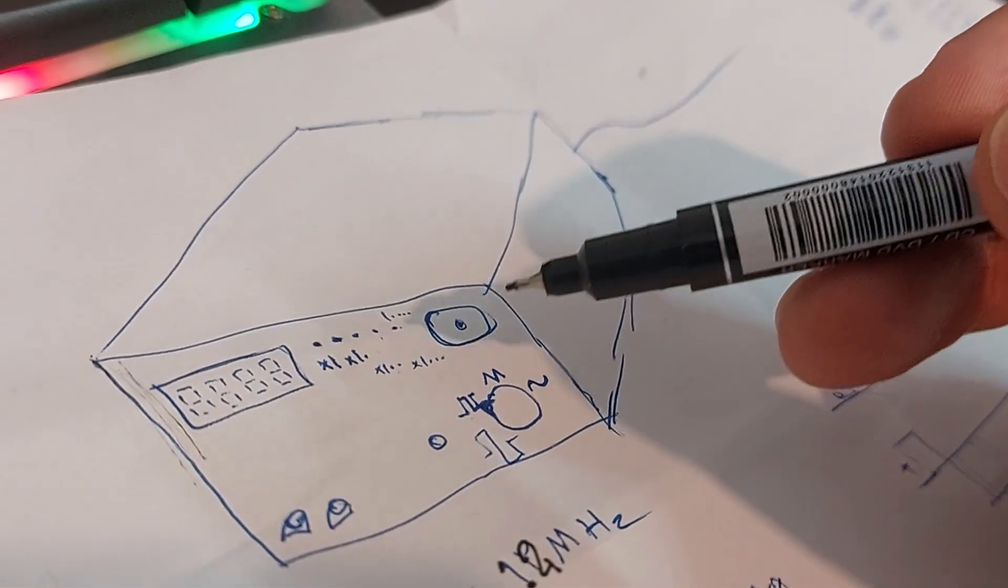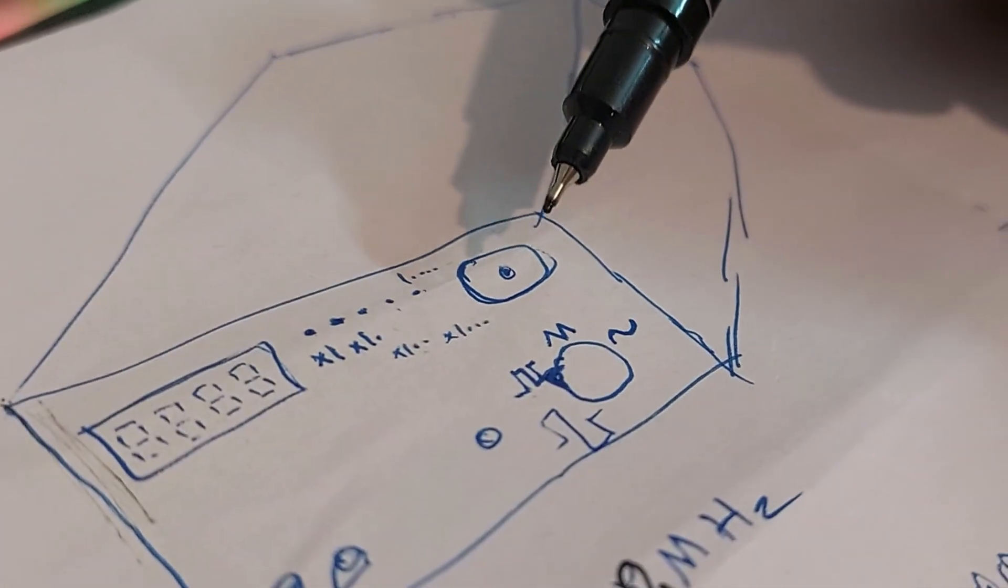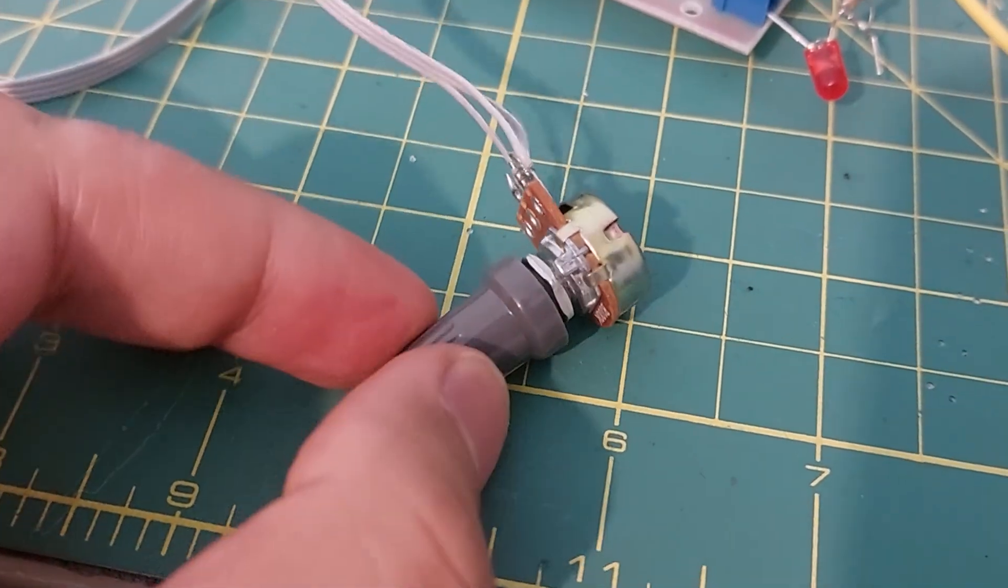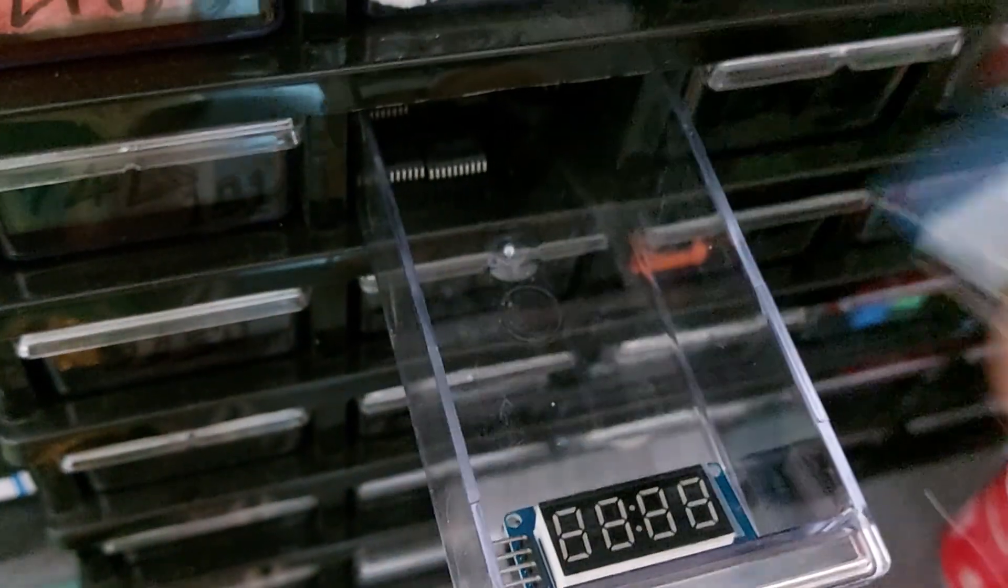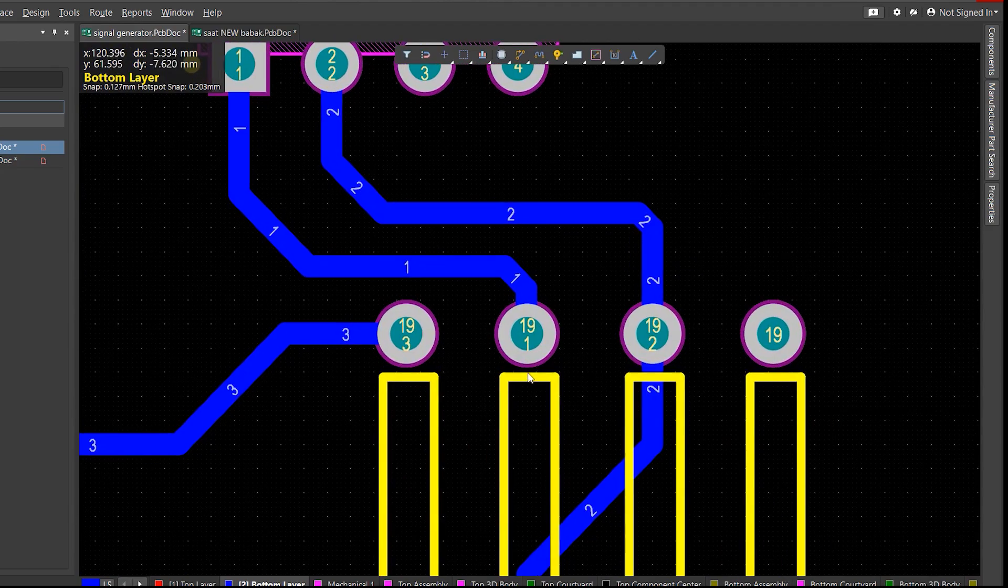One knob to control the output amplitude, another for the DC offset, one for the frequency, and a 7-segment display to show the frequency. Plus, a few other ideas that I can't quite remember right now.